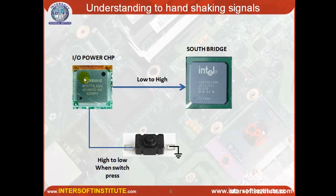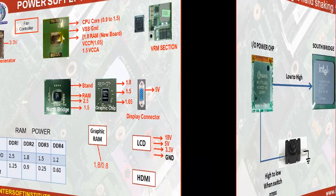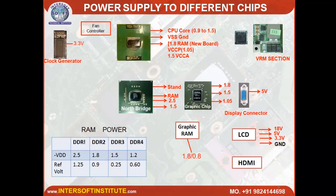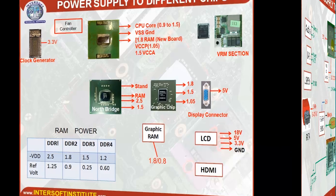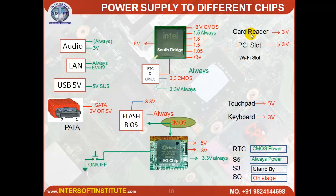South bridge sends a high-to-low signal to the power IC. Power IC then gives signals to regulator ICs and VRM ICs. After power good is received, it signals North bridge about the power good. These passing signals are called handshaking signals. New CPUs require 3 to 4 different voltages; older CPUs required only one. The CPU connects with RAM, and in some boards controls the graphic ICs. South bridge connects to the card reader (3V), PCI slot (3V), Wi-Fi slot, touchpad (5V), and keyboard (3V).